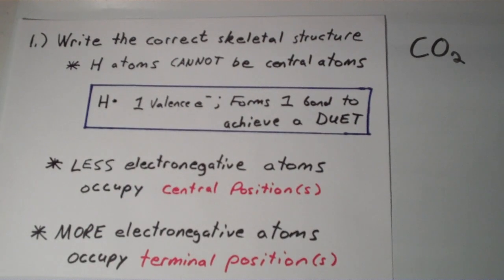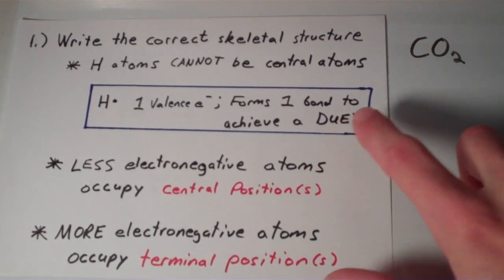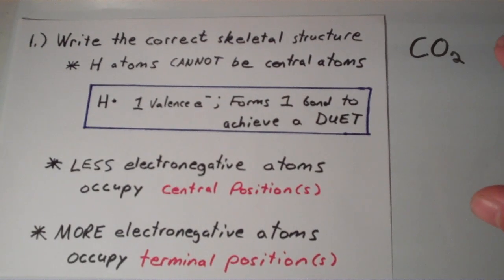Okay, and to do this we generally follow a couple of guidelines. So first of all, hydrogen atoms cannot be central atoms, they can only be terminal. So if you remember hydrogen has one valence electron, it is monovalent meaning it forms only one bond and it achieves what's called a duet. So hydrogen cannot form any more than one bond.